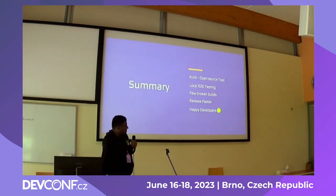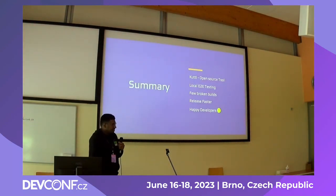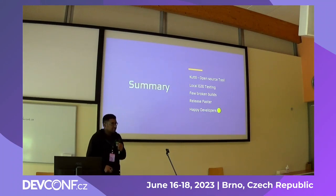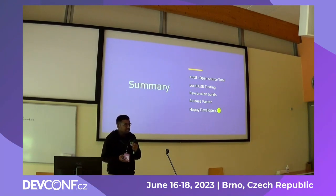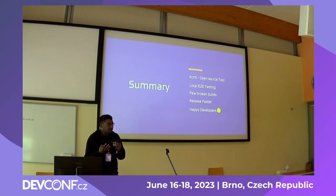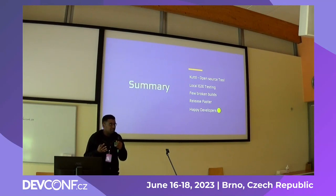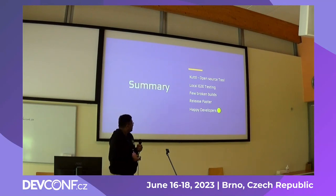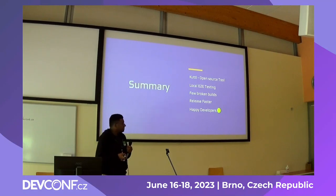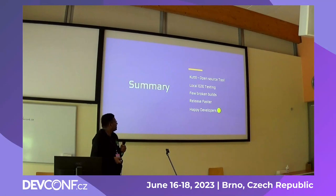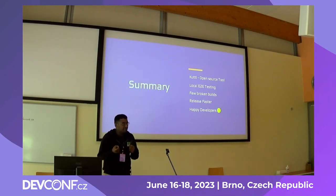Summary: Cuttle is an open source tool you can contribute to. It is used for local end-to-end testing. With it, we were able to minimize the builds we broke as part of our code. When you test end-to-end locally, most feature branch changes will work. With fewer broken builds, you can release much faster than before — and that means happy developers.